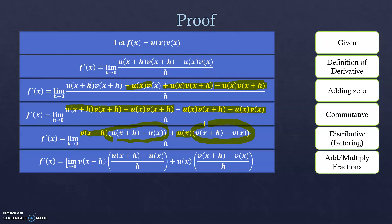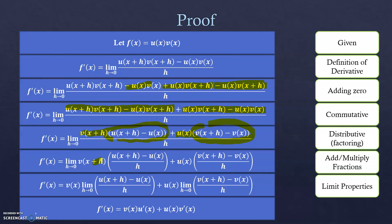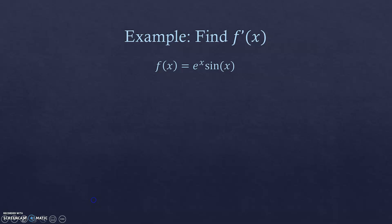Using limit properties, as h goes to 0, v(x+h) becomes v(x). What remains matches the definition of the derivatives of u and v, giving us the product rule. You are not responsible for reproducing this proof yourself, but you should be able to follow each step.